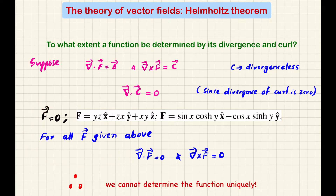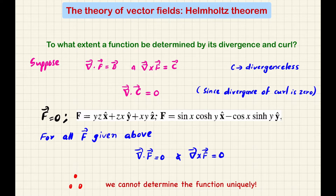I will tell you three cases. If divergence and curl are given, the vector function may not be unique — there can be multiple solutions. We cannot determine the function uniquely from the divergence and curl alone. So we need something extra to determine the vector function uniquely.